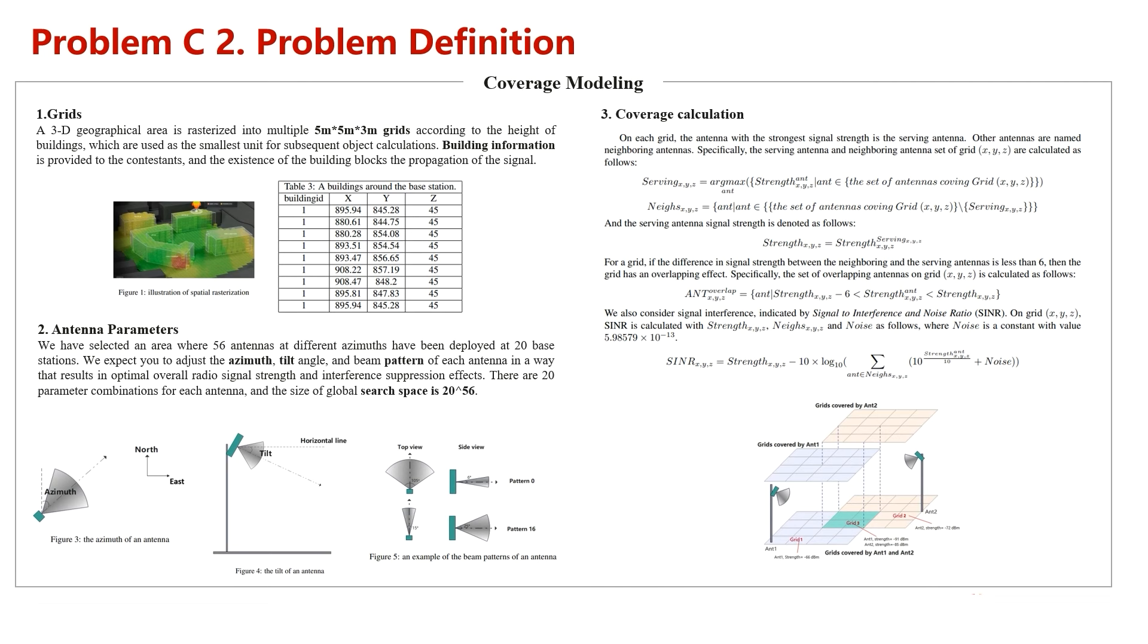The overlapping effect occurs when the gap between the signal of serving antenna and neighboring antenna is less than 6, and the overlapping will lead to interference, finally causing bad user experience. We may also provide you the formula of this kind of interference, denoted as signal.